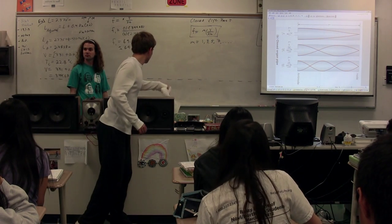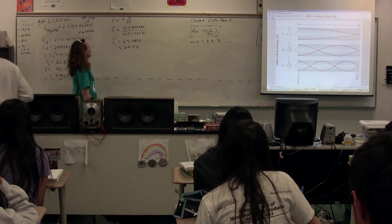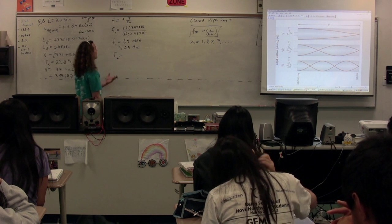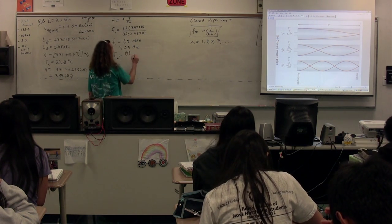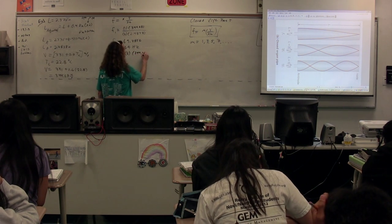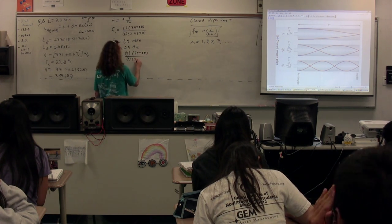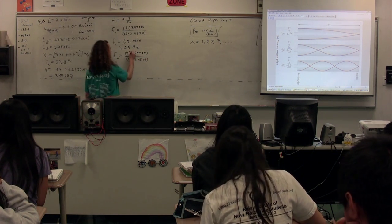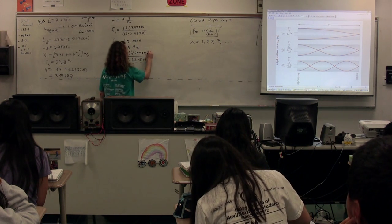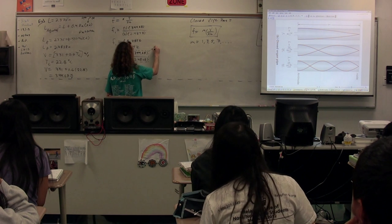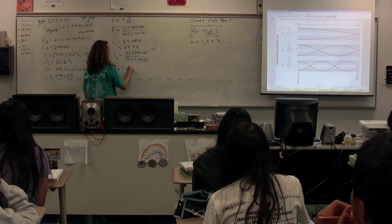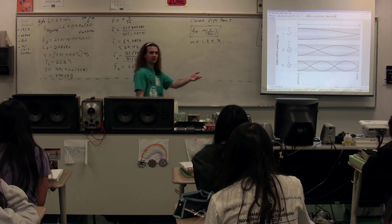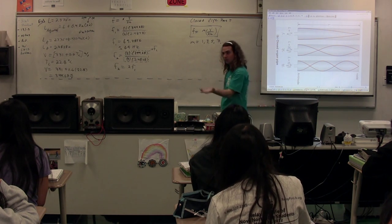So now we're going to figure out the second harmonic. The second harmonic, again, is n times v over 2L, but it's just replacing it with a 2. So 2 times 344.68, divided by 2 times 2.4838. But I want you to notice something, which is this piece right here is the fundamental frequency. In other words, the second harmonic is just 2 times the first harmonic. Same is going to be true for the third harmonic. The third harmonic is just going to be 3 times the first harmonic, and the fourth, and so on and so forth.